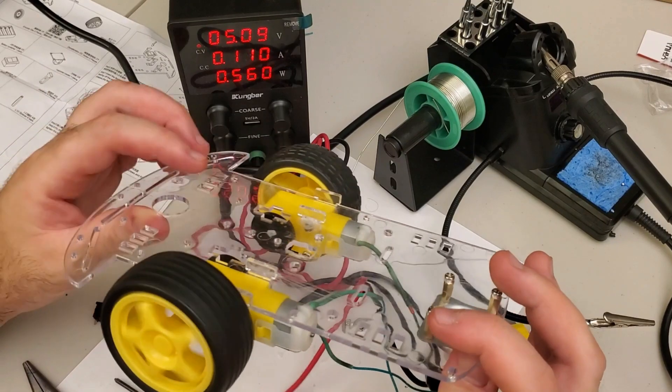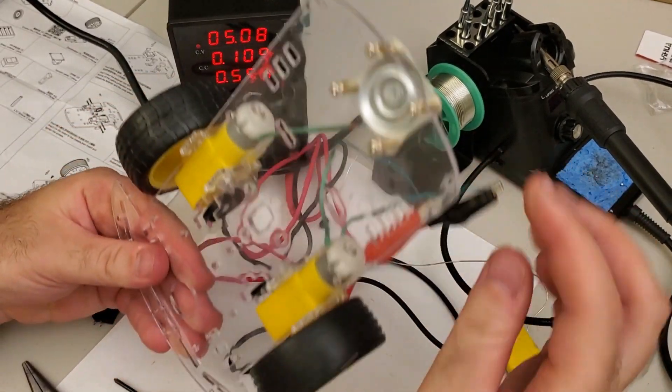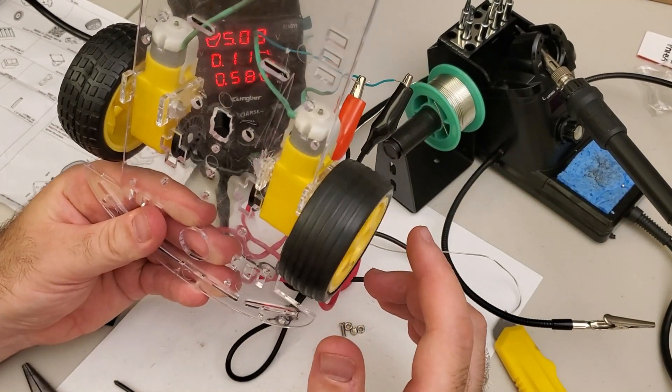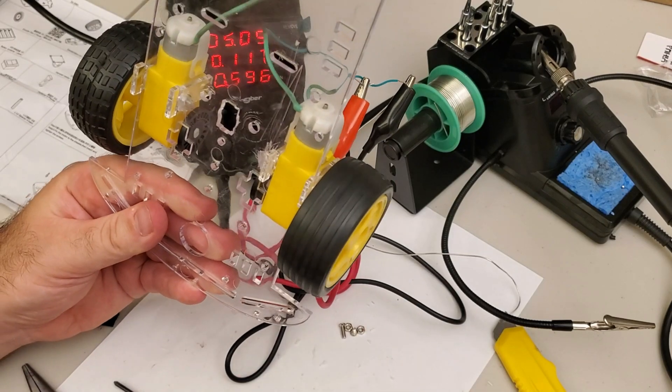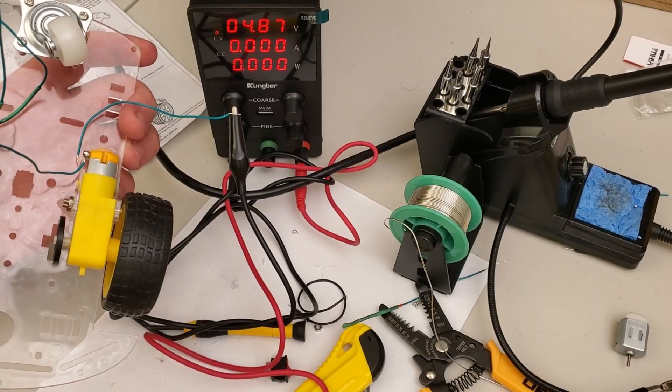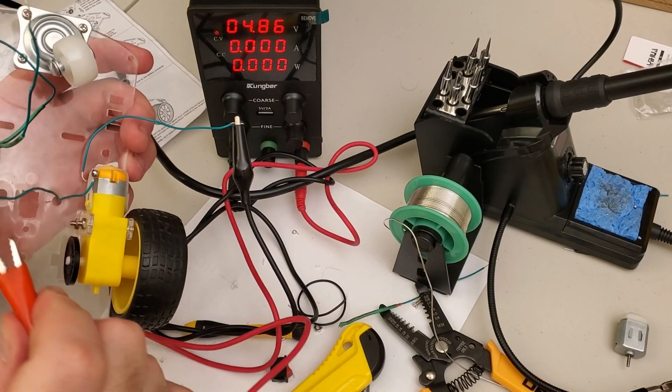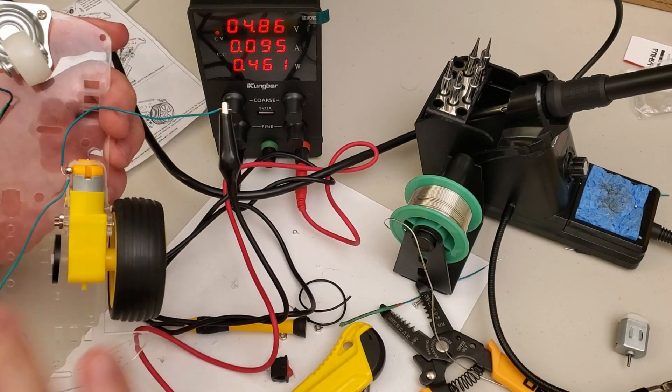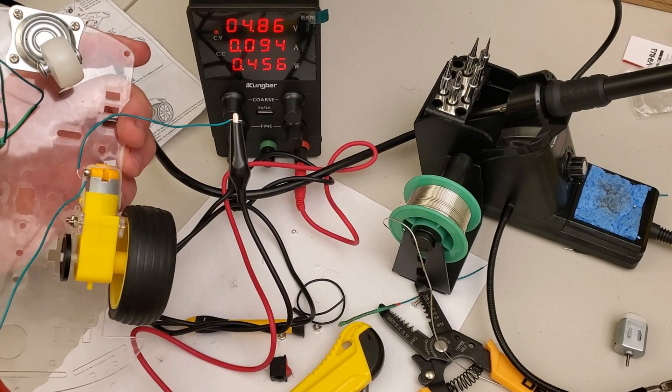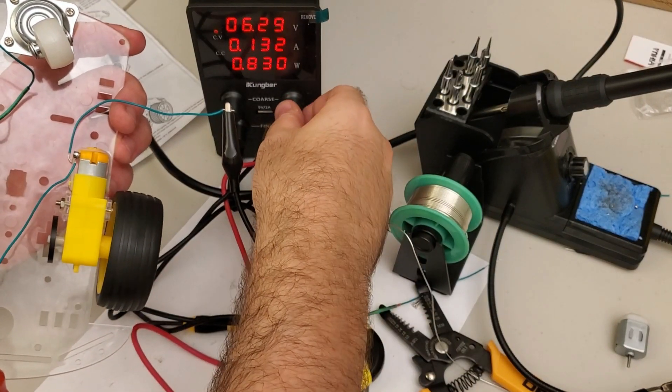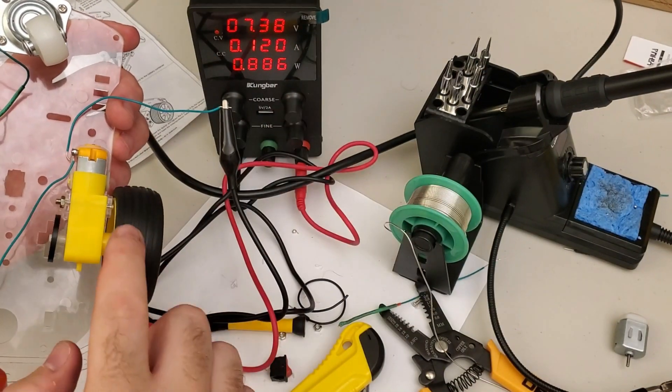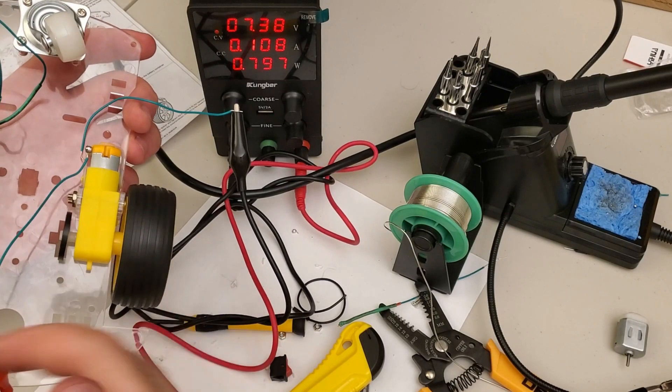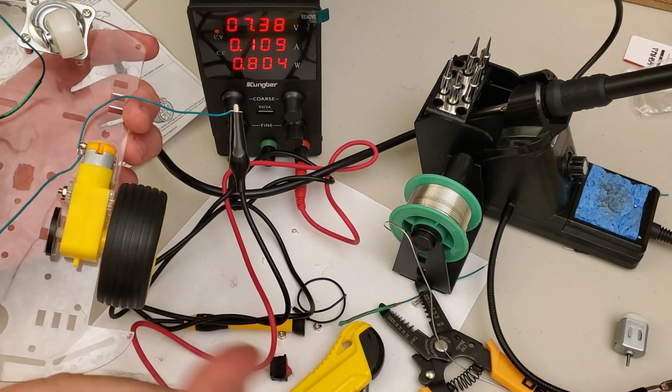Here is again how our motor spins. It works nicely. Next, let's test the right motor. Perfect. The right motor is also spinning. Now let's see what happens if we increase the voltage. As we increase the voltage we can observe that the motor spins with a faster angular velocity.